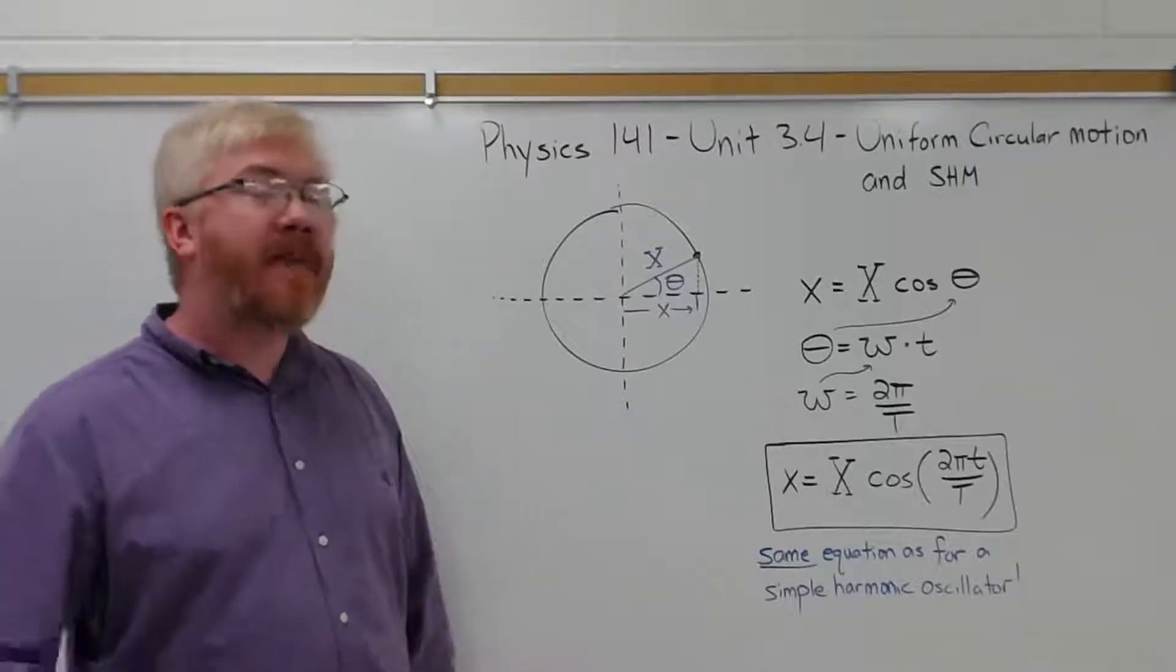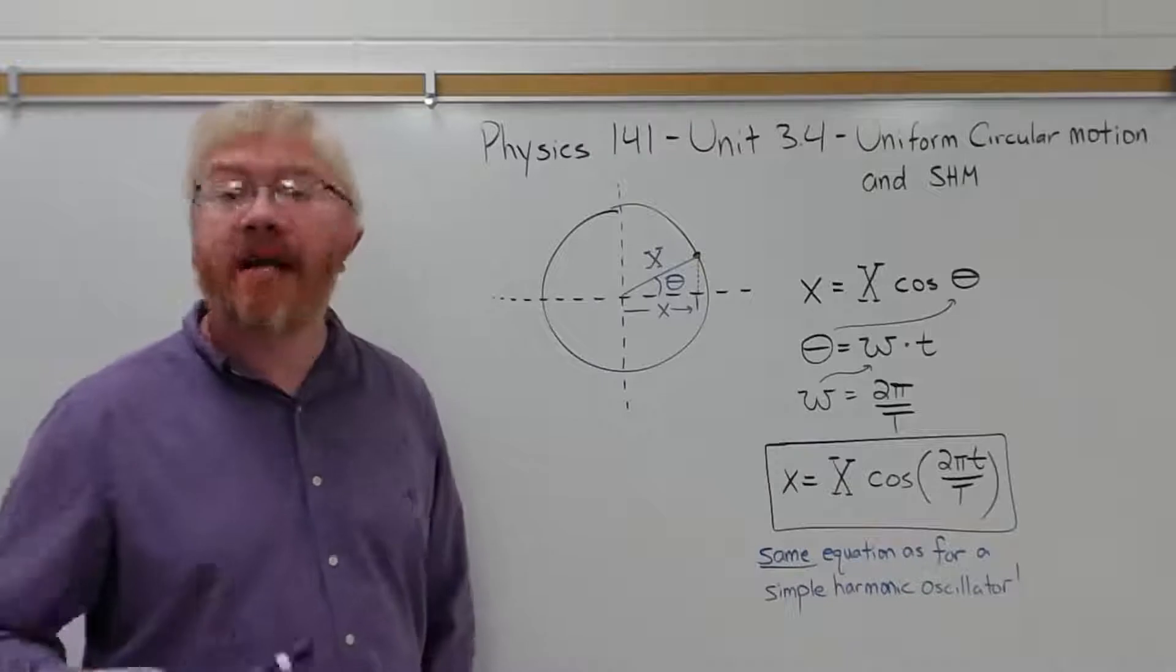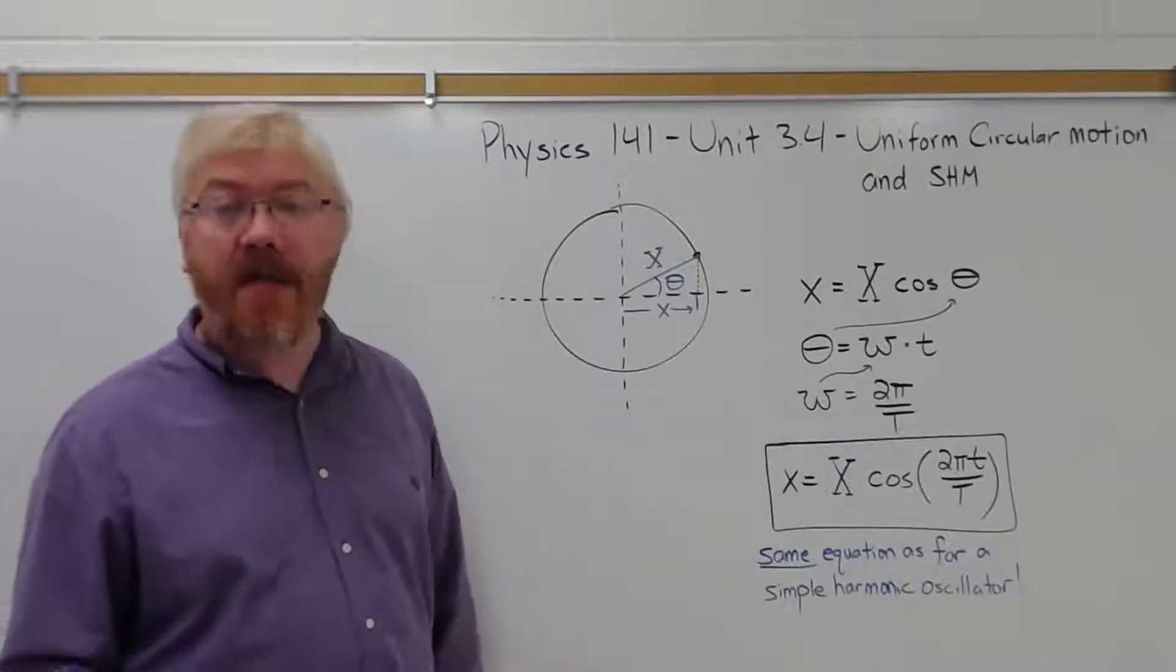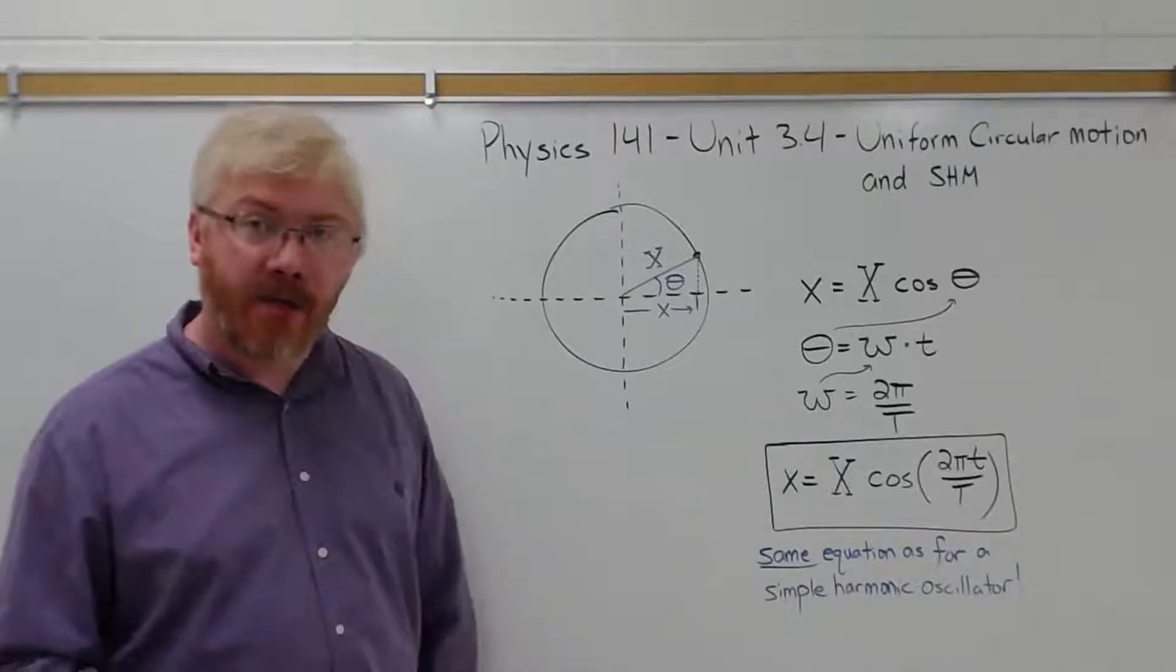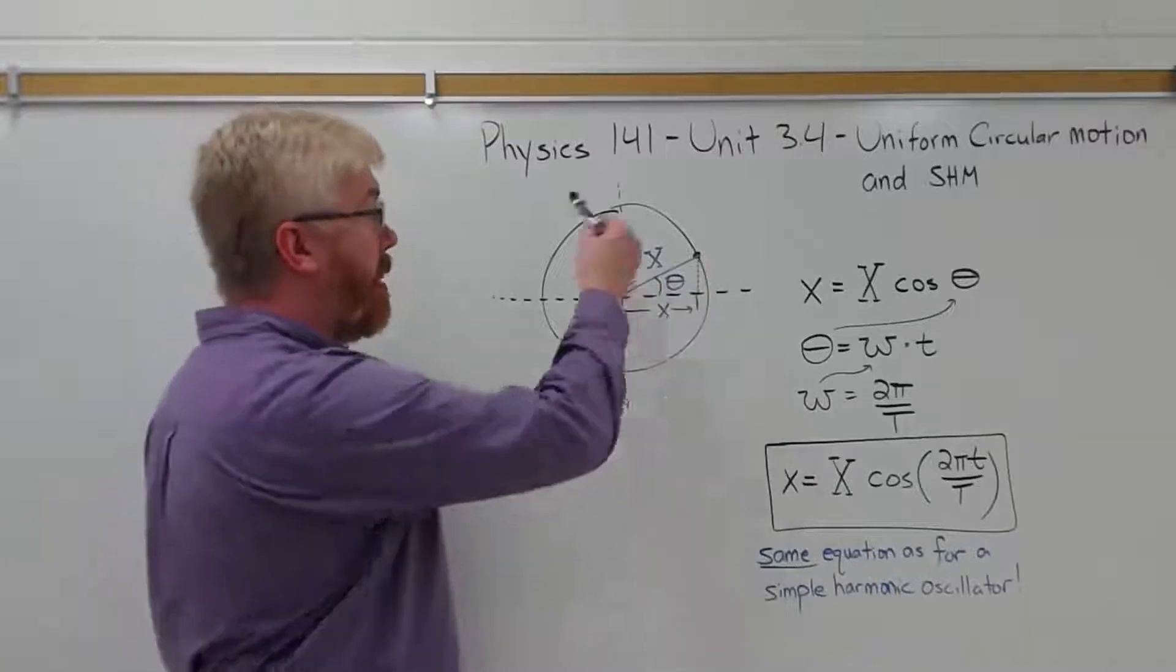So the speed of the object is not changing, the velocity of the object is constantly changing because its direction is constantly changing as it goes around in a circle.